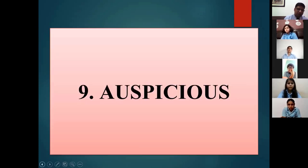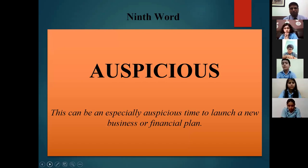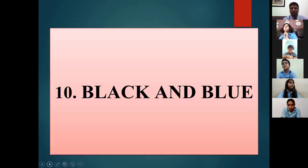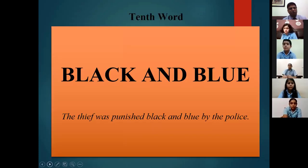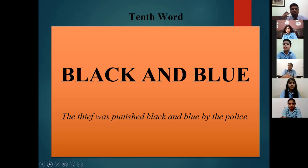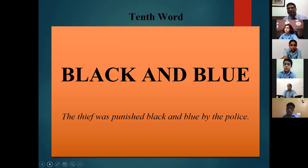Word nine for Nishtha Kumar Rana: 'Auspicious' — 'This is a specially auspicious time to launch our new business' — correct, perfect. Word ten for Vanshika: 'Black and blue' — 'The thief was punished black and blue by the police' — perfectly correct. Black and blue means to beat somebody harshly.